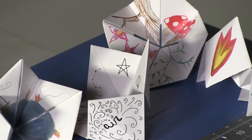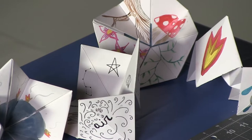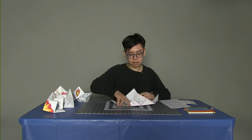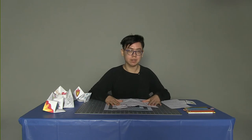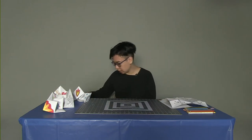When we are making our fortune teller or story maker we need a square piece of paper, but it's okay if you don't start with a square piece of paper. You can start with a rectangle.